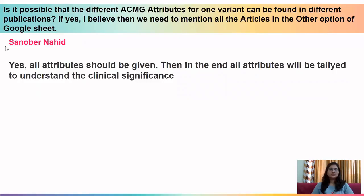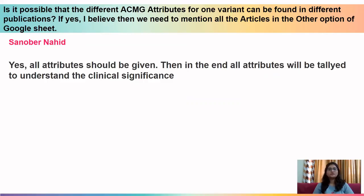Sanobar asks: is it possible that different ACMG attributes for one variant can be found in different publications, and should we mention all articles? Yes — all attributes should be assigned depending on the publication. Even if there are contrasting attributes in different publications, the contrasting details should be added. In the end, we tally all the attributes to understand the clinical significance. Just add whatever attribute you can derive from any publication and give the PMID in the Google Sheet.